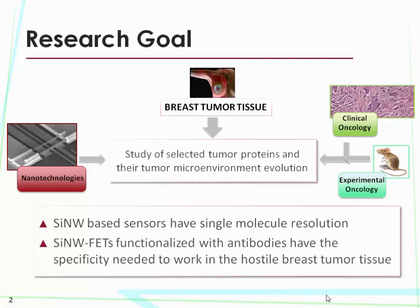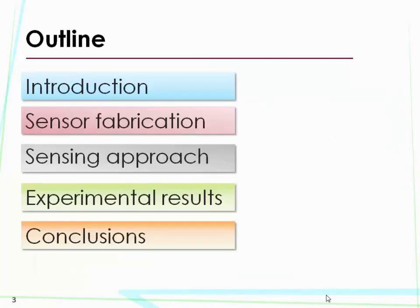Moreover, we want to use the exquisite nature of the antigen and antibody system because we need very high specificity if we work in the hostile breast tumor tissue. This is the outline of my presentation: I will introduce the topic, describe the fabrication of the sensor and the sensing approach, show some results, and end with some conclusions.